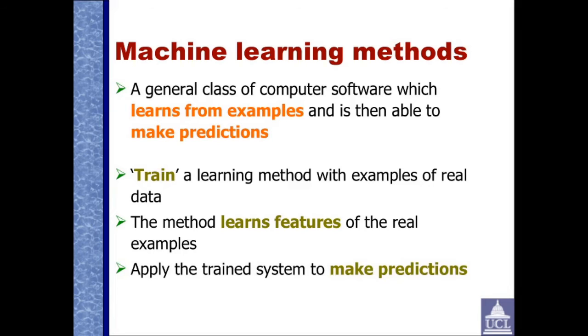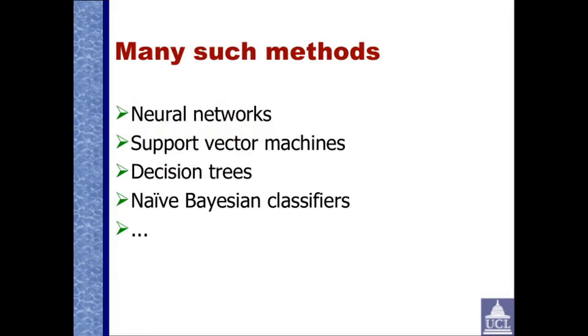In this case, you'd give it a window of amino acids and it would predict whether the central residue was in an alpha helix, beta strand, or neither. There are many such methods: neural networks, support vector machines, decision trees, naive Bayesian classifiers. The list goes on and on. Neural networks are a very popular method and have seen quite a resurgence over the last few years with this idea of deep learning, where we have much more complicated neural networks than the early ones. You will learn more about these in later lectures.